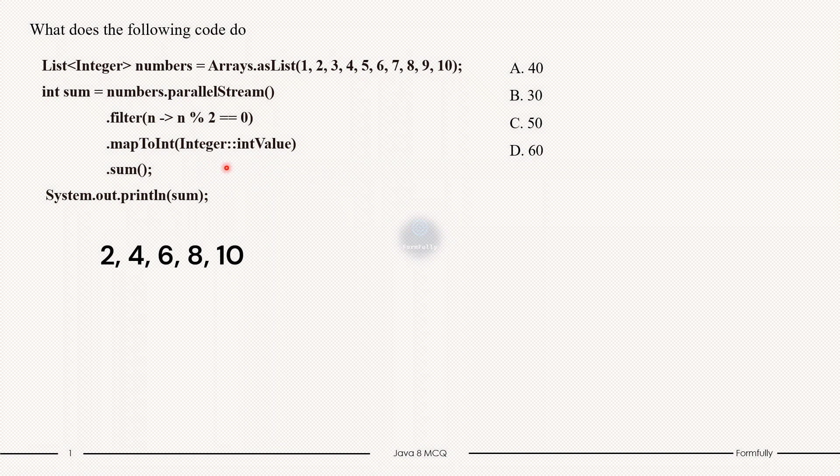Then converting to int. We use mapToInt method that converts the remaining numbers, which are Integer objects, into primitive int values. This is necessary because sum works with primitive int values, not objects. So after summing 2, 4, 6, 8, and 10, the value will return 30.